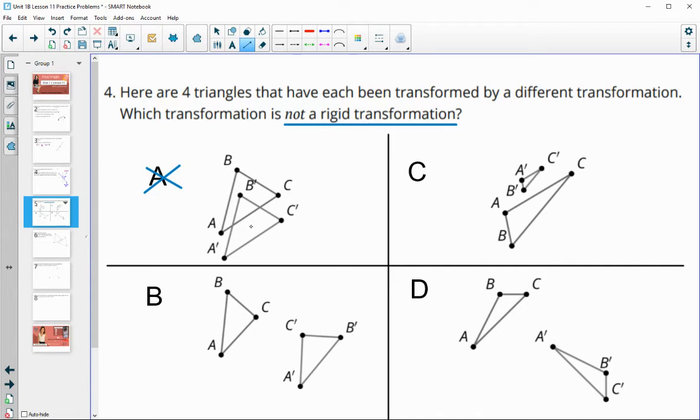The triangles in A stay the same. In B stay the same. In C they change. So that would be our answer. And in D they don't change sizes again. So C is the one that is not a rigid transformation.